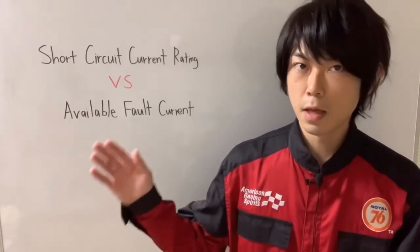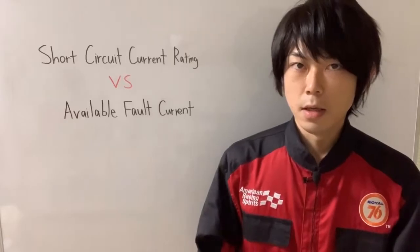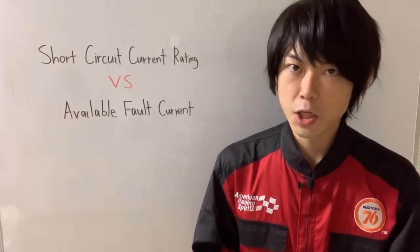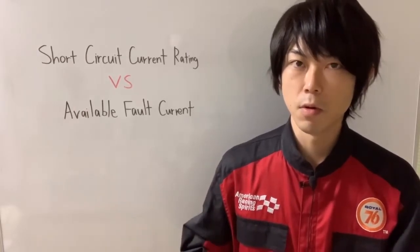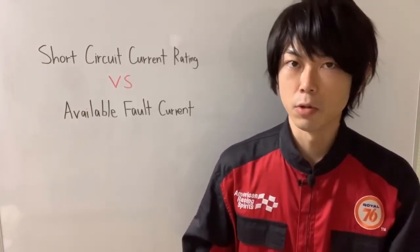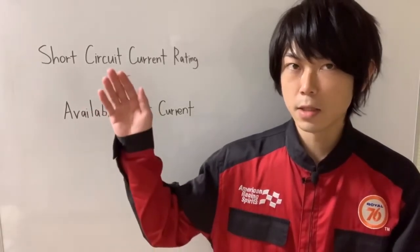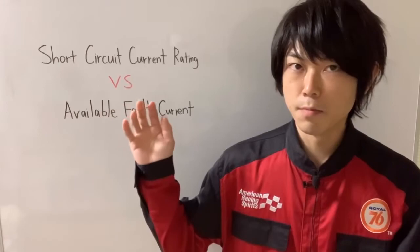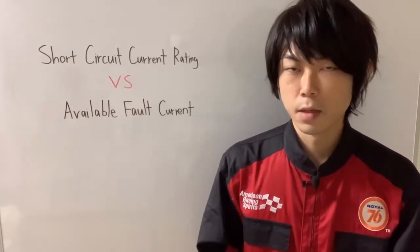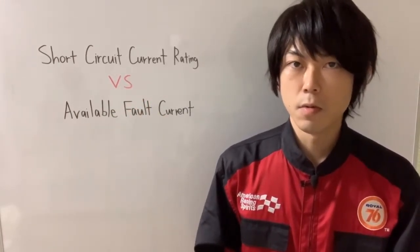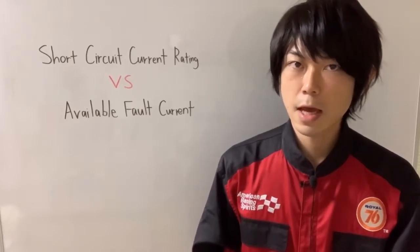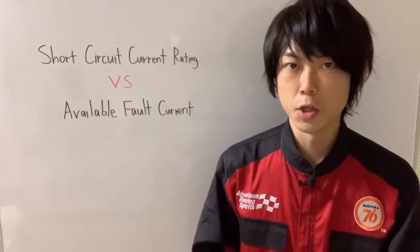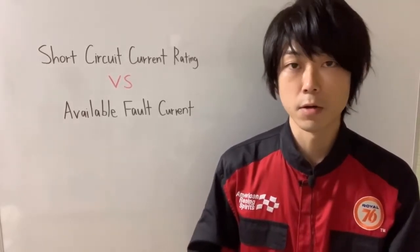On the other hand, available fault current is not an equipment rating but the amount of objectionable current that will flow at any point of our system as fault. So SCCR should not be less than the maximum available fault current. This concept is to eliminate downtime and increase worker safety. It must be taken into account when an engineer analyzes any power system.